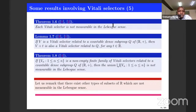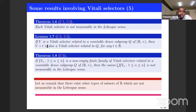To prove this statement, we need only to use the previous decomposition. Another important result about the Vitali selector is that whenever you take a Vitali selector related to a countable dense subgroup of the additive group of real numbers and translate it by a real number, you get again a Vitali selector. This means that the translated set should also be a non-measurable subset of R.